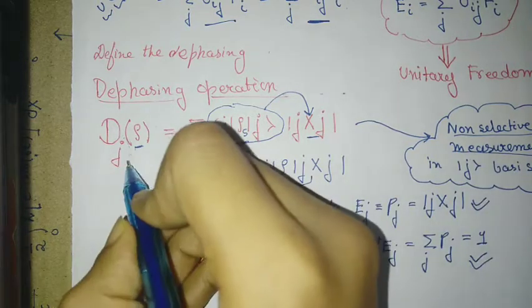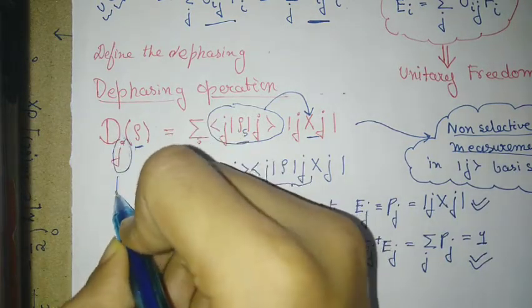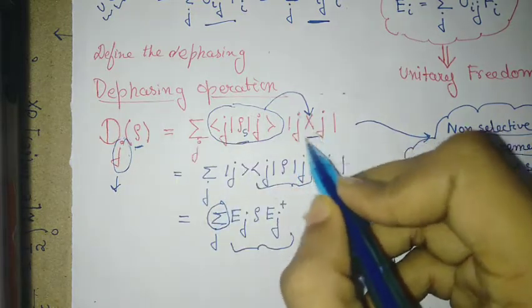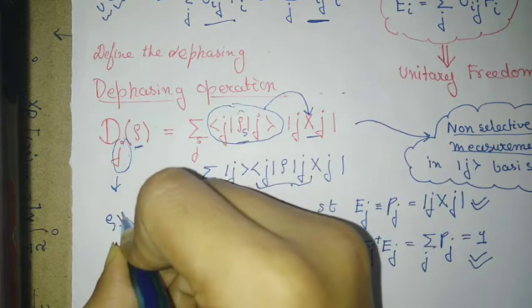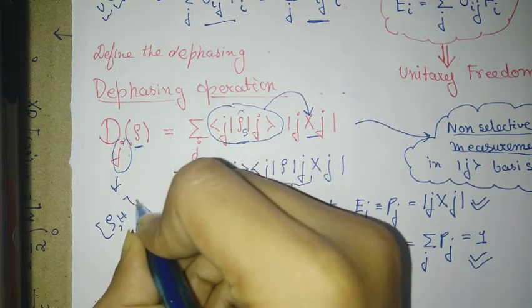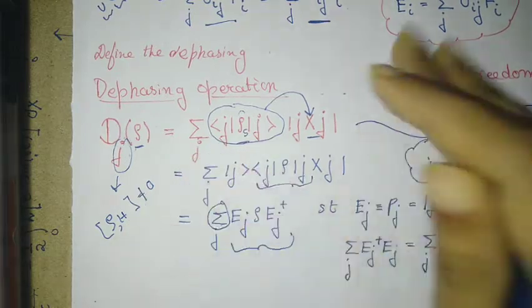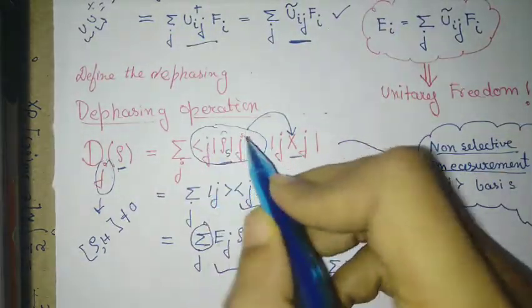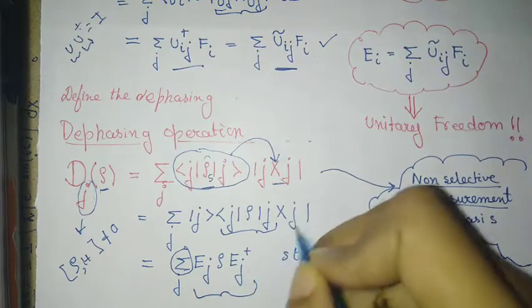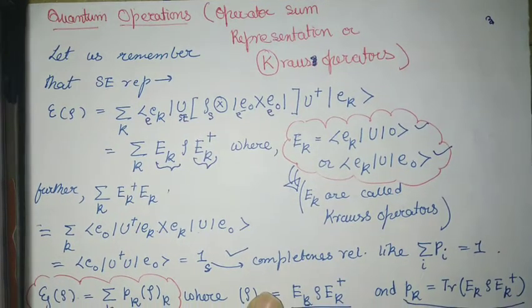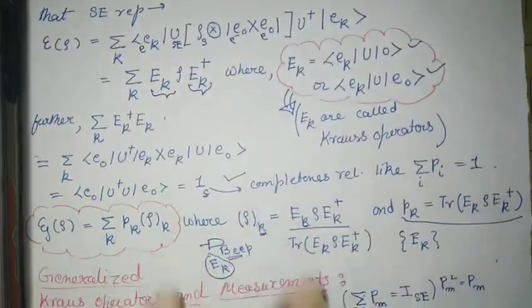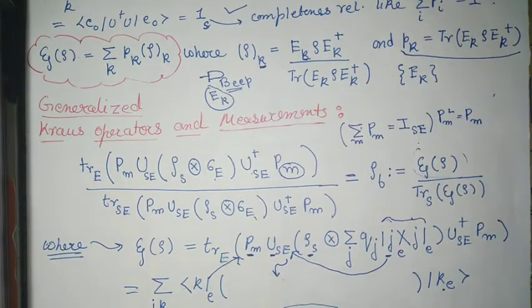These measurements are called non-selective measurements, which I have discussed in the first few lectures of this series. The dephasing operator is very useful because I can dephase in any basis — for example, in the energy basis of a Hamiltonian. Even if ρ and the Hamiltonian don't commute, meaning they don't share a complete spectrum of eigenvalues, I can dephase to gain some information. That's all for this video. I hope this was an exhaustive treatment of the Kraus operators. Please go through these calculations again if you have any doubts.